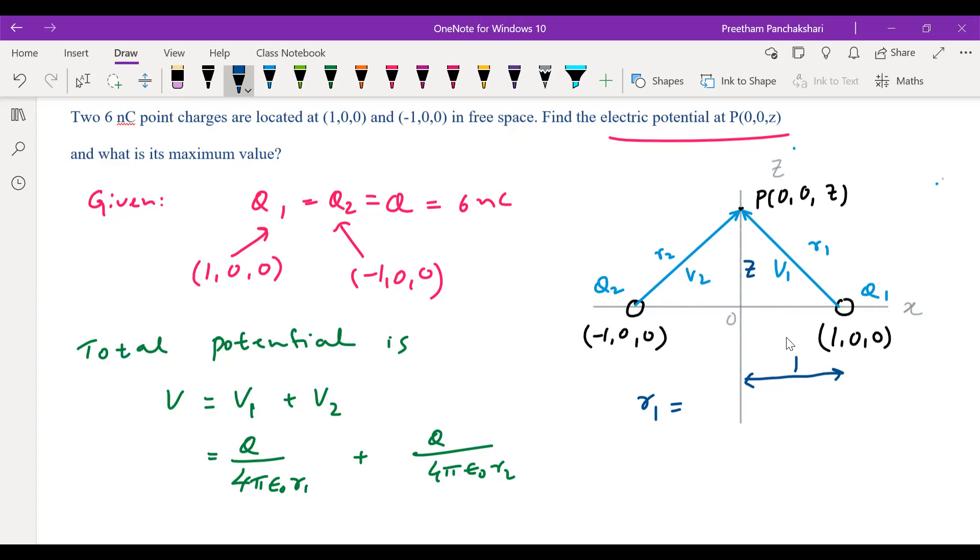Otherwise, we know our regular method of calculation. So we can find R1 as root of the difference of x components (0,1), 1 square plus y component both 0, z component is z, z square. It's going to be root of 1 plus z square. For R2 also same. R2 is also equal to R1, that is root of 1 plus z square.